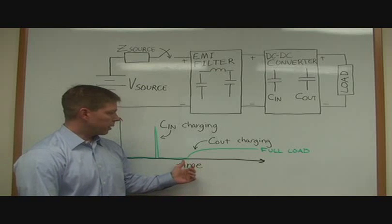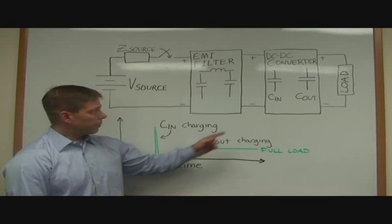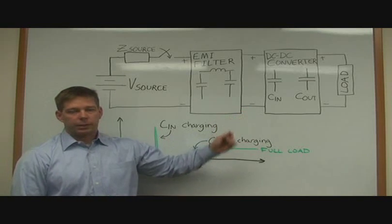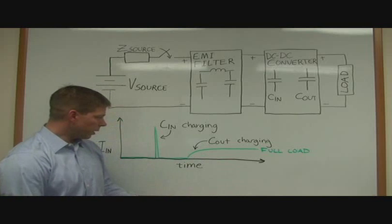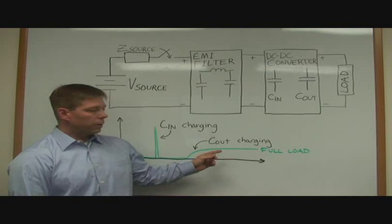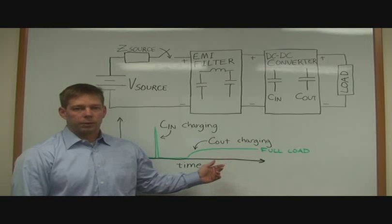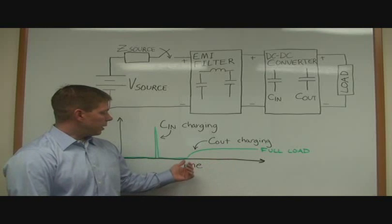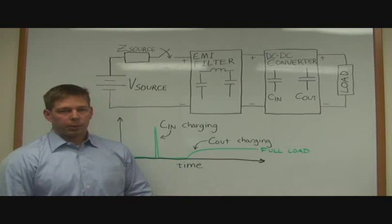Now, the second region of the inrush current waveform is the charging of the output capacitance of the DC-to-DC converter and also any capacitance that's in the load. This is always well controlled when using VPT DC-to-DC converters because they have a soft start circuit that slowly ramps up the output voltage to control that charging of those output capacitors.